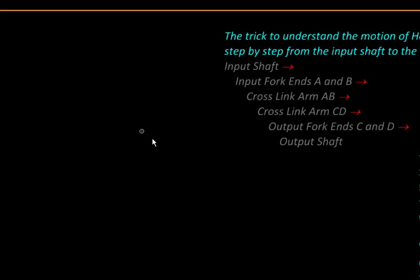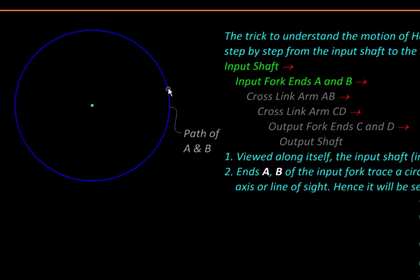Let us understand it step by step. First, we are viewing along the input shaft, so it appears as a point, and its fork ends A and B will be tracing a perfect circle. Let us take one of their arbitrary positions like this.